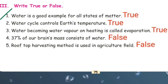True or False. Question 1: water is a good example for all states of matter. Answer: True. Question 2: water cycle controls earth's temperature. Answer: True.